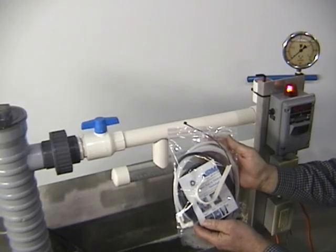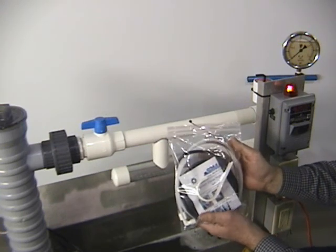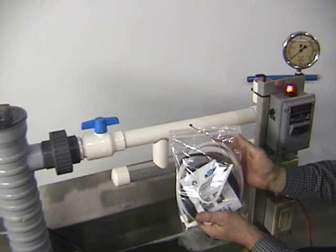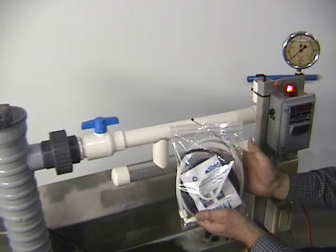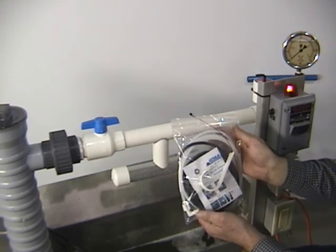This here is the Simtek filter pressure alarm switch as an option for Simtek pressure filters. Each pressure filter has a tapped hole that will accommodate a switch either now or any time in the future.